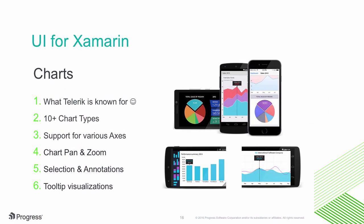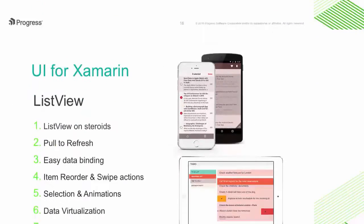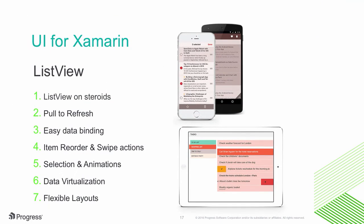To give you a glimpse of some of the polished UI you get with UI for Xamarin: there are charts — lots of different chart types with interactive features like pan and zoom, selections, and annotations. There is an excellent list view, because most apps need to display a list of things. The Telerik list view is feature-rich, with pull to refresh, flexible layouts, easy data binding, and item reordering and swipe actions.